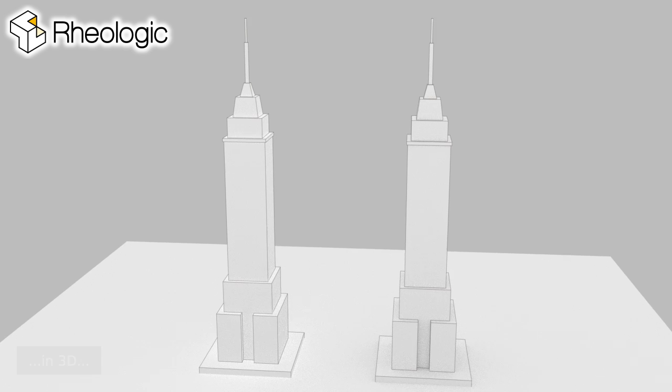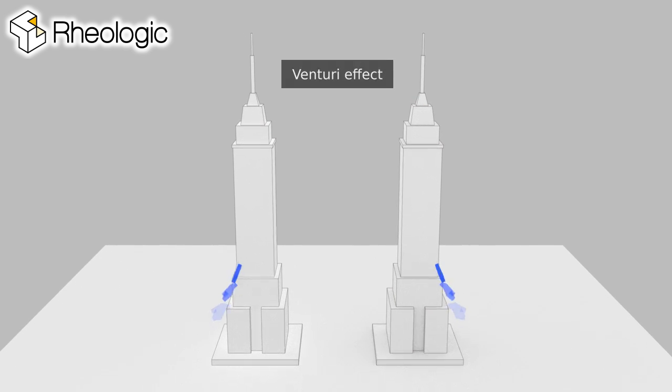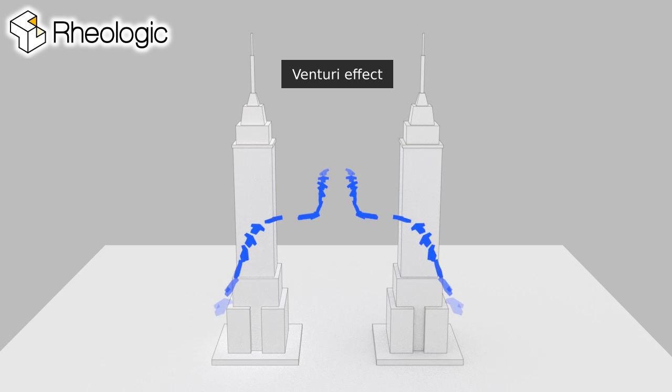Looking at buildings in three dimensions, there is the Venturi effect that causes strong wind and high turbulence between buildings.